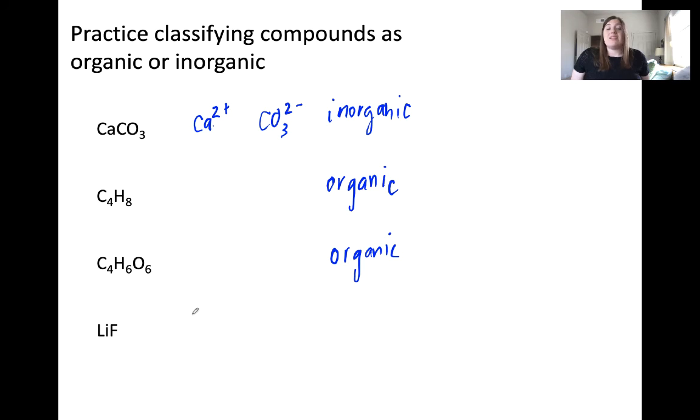LiF is another ionic compound. The metal, lithium, is a cation. The anion is fluorine, the non-metal. Because this doesn't contain either carbon or hydrogen, it has to be an inorganic molecule.